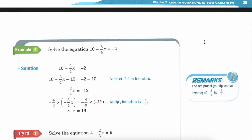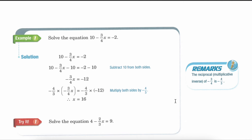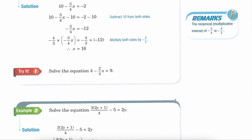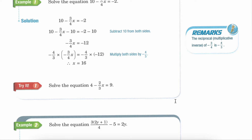Here is another problem on your own if you wanted to try: 4 minus 2 thirds x equals 9. But we're going to move on and take a look at this next problem. Solve the equation: 3 times the quantity of 2y plus 1, divided by 4, minus 5 equals 2y. Go ahead and pause your video and try that one on your own first.